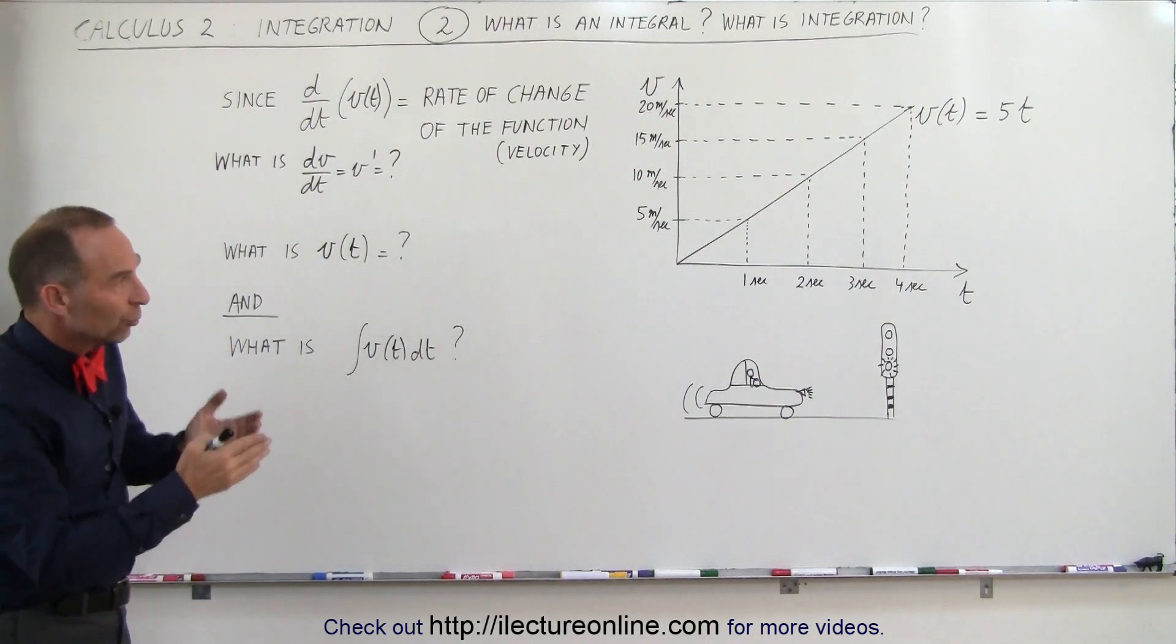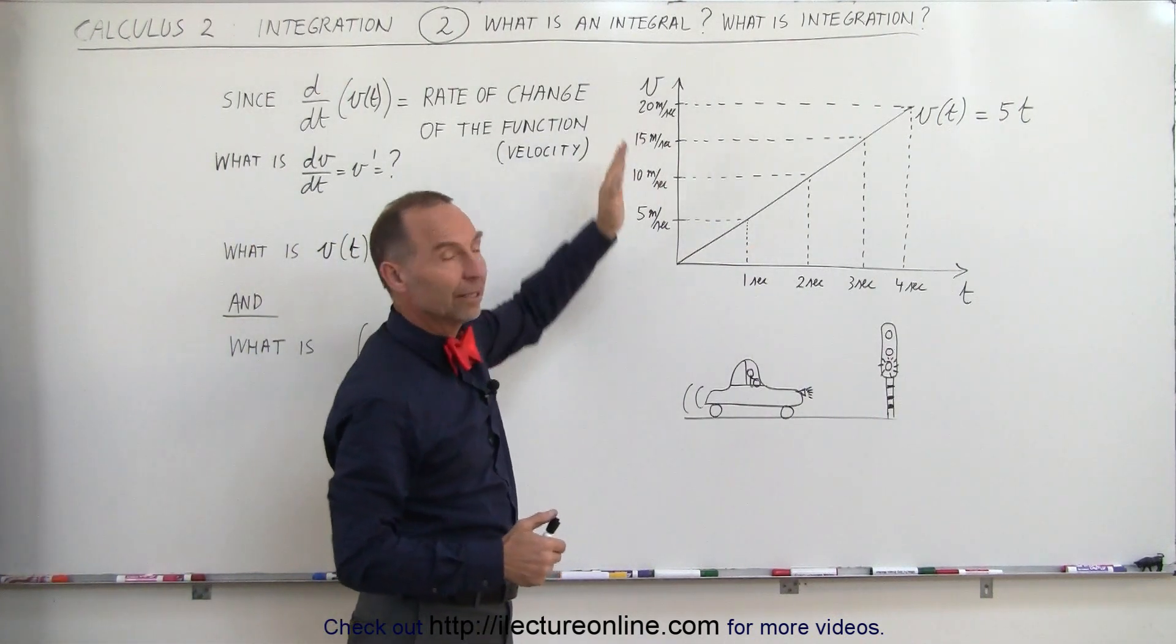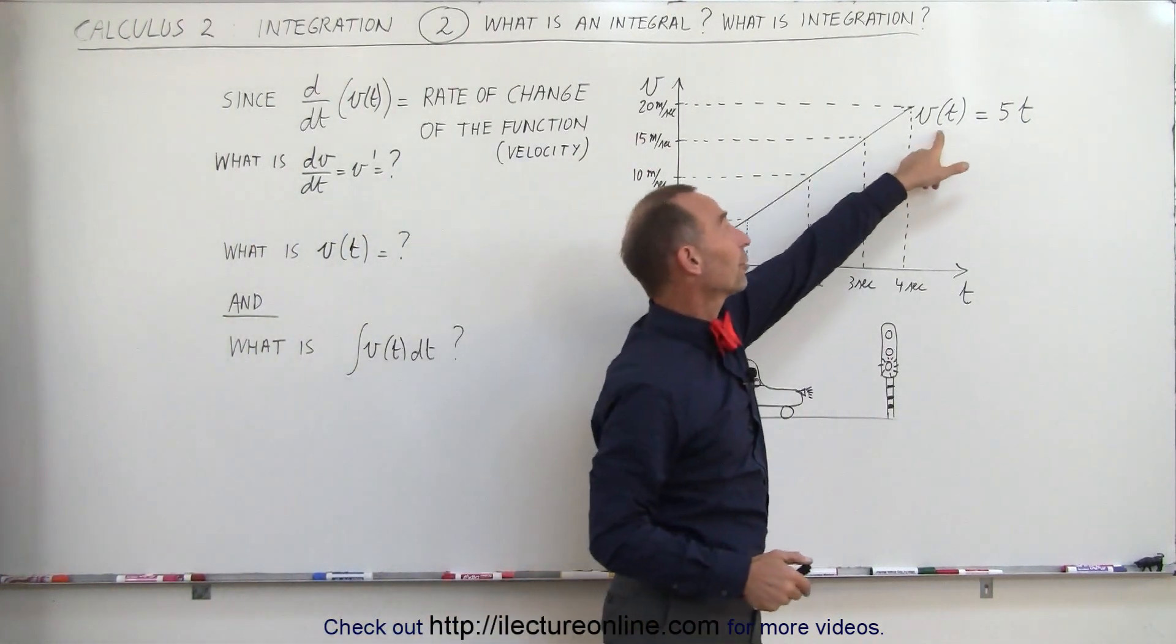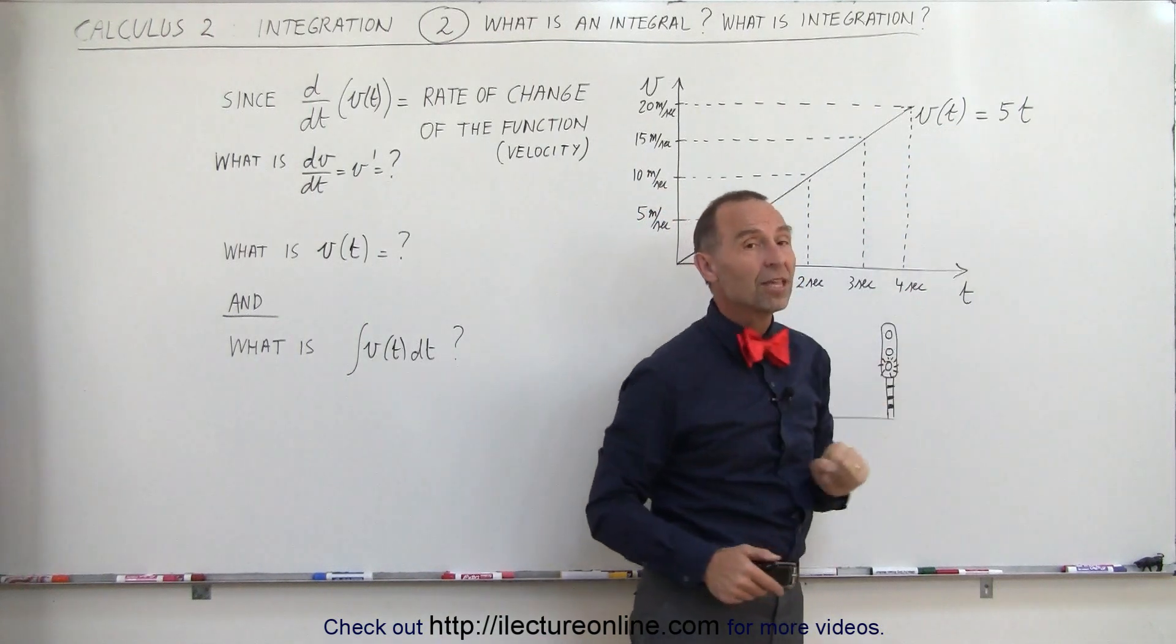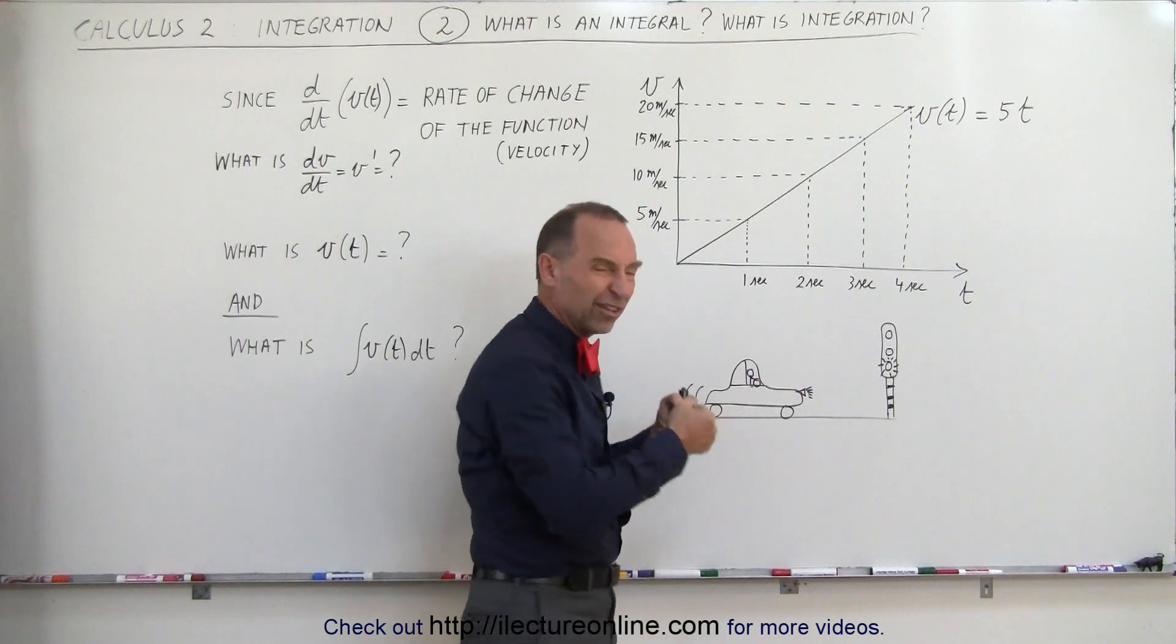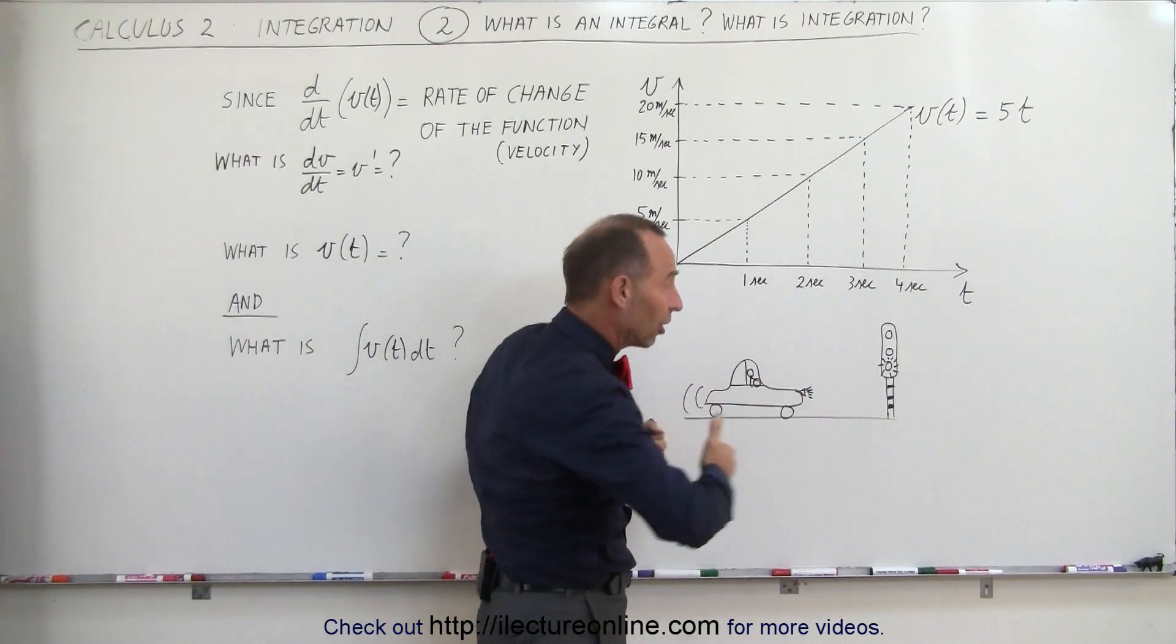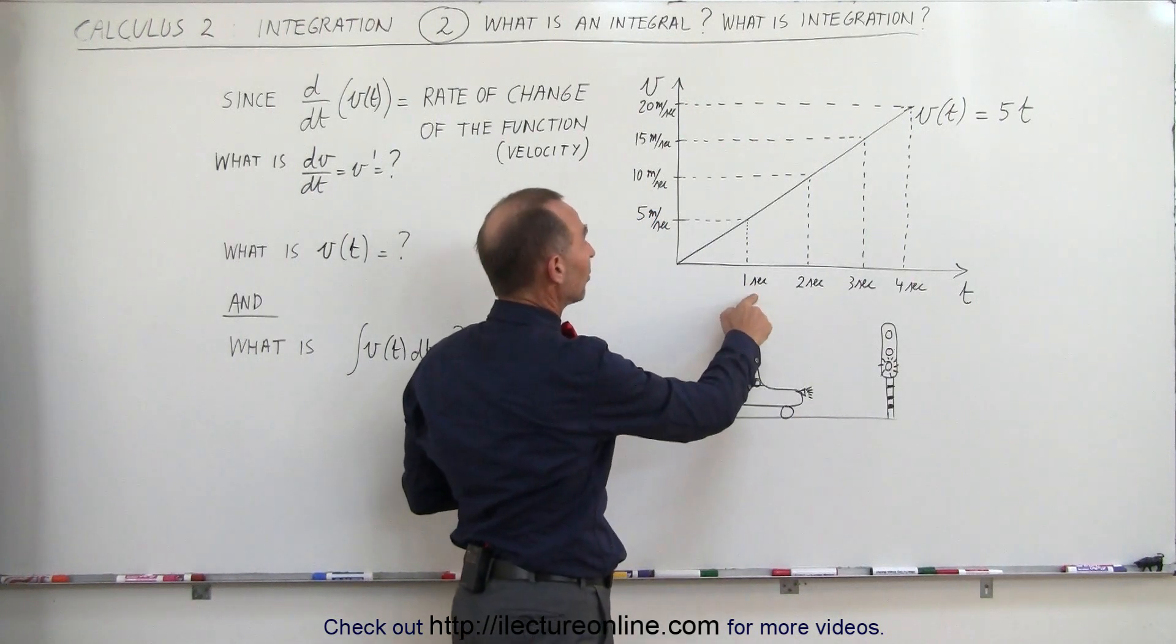Here we have a function written on this graph where we have a relationship between time and velocity. The function is written as v as a function of time equals 5 times t. Notice that after one second, if this is a driver standing in front of the red light, the light turns green, the driver pushes on the gas and the car accelerates.